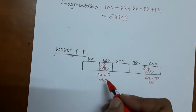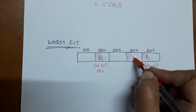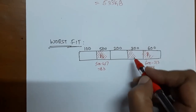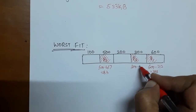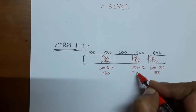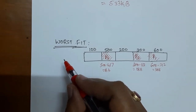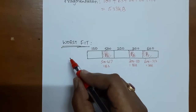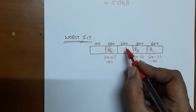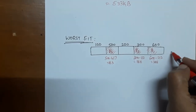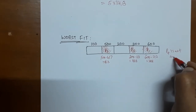The next process P3 is of size 112 KB. The third largest partition is 300 KB, so P3 is allocated there, creating a hole of 300 minus 112, equal to 188 KB. The fourth process P4 is of size 426 KB. The next free partition is 200 KB, which cannot accommodate P4. So the worst fit algorithm says P4 is not allocated with any memory block.